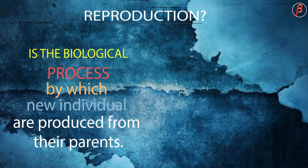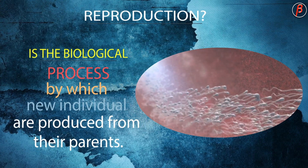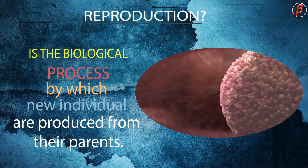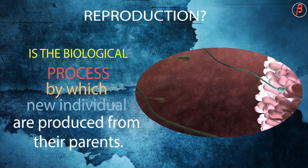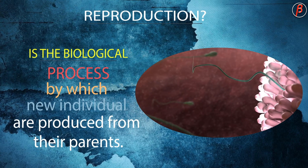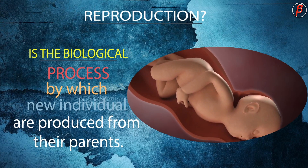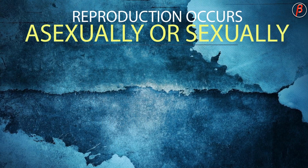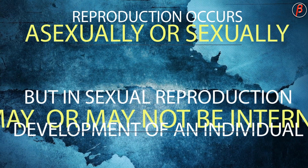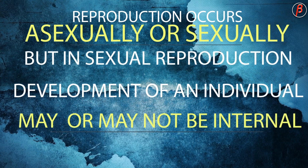Reproduction is one of the most important characteristics of all living organisms. It's a biological process by which new individuals are produced from their parents. Reproduction occurs asexually or sexually, but in sexual reproduction, development of an individual may or may not be internal.